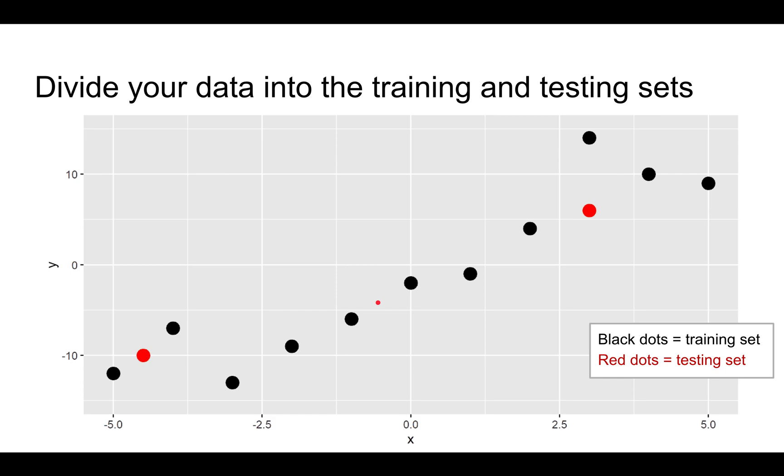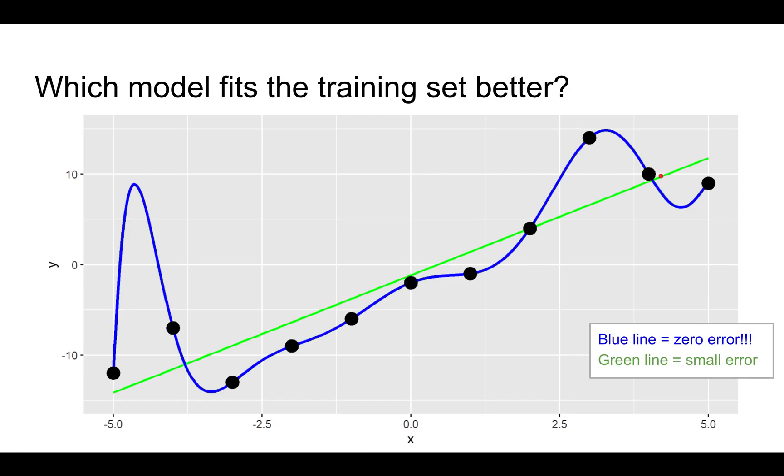Here's a very simple example, where the black dots are the training set, and the red dots are the testing set. So here are two models for the training set. The blue curve fits the data exactly. There's basically zero error. But it fits some of the idiosyncratic features of this data, whereas the green line basically just fits the general trend and ignores some of the idiosyncratic noise in the data.